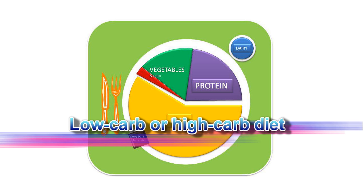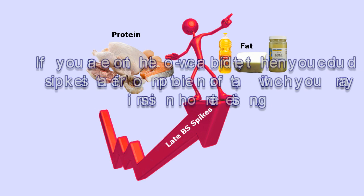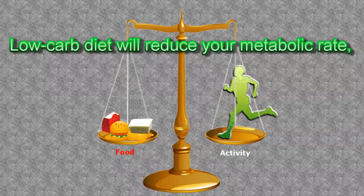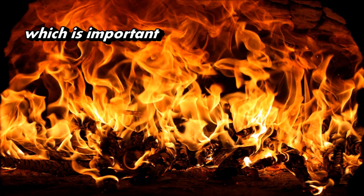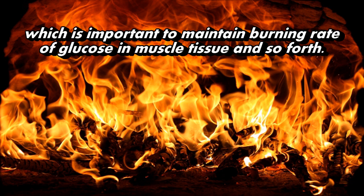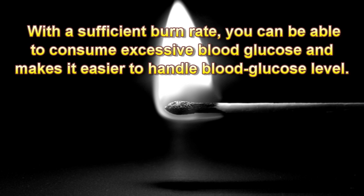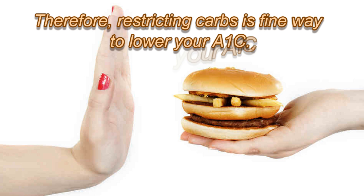Low-carb or high-carb diet: If you are on a low-carb diet, you could experience blood sugar spikes from protein or fat, which you may miss in home testing. A low-carb diet can reduce your metabolic rate, which is important to maintain the burning rate of glucose in muscle tissue. With a sufficient burn rate, you can consume excessive blood glucose more effectively. Therefore, restricting carbs is a fine way to lower your A1c.